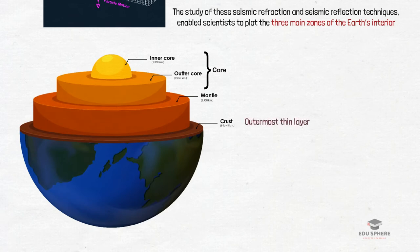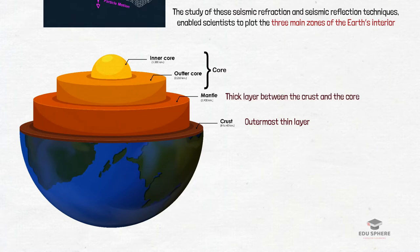The crust is the outer layer of rock which forms a thin skin on the Earth's surface. Below the crust lies the mantle, a thick shell of rock that separates the crust above from the core below. The metallic core is the central zone of the Earth which is also the source of the Earth's magnetic field.